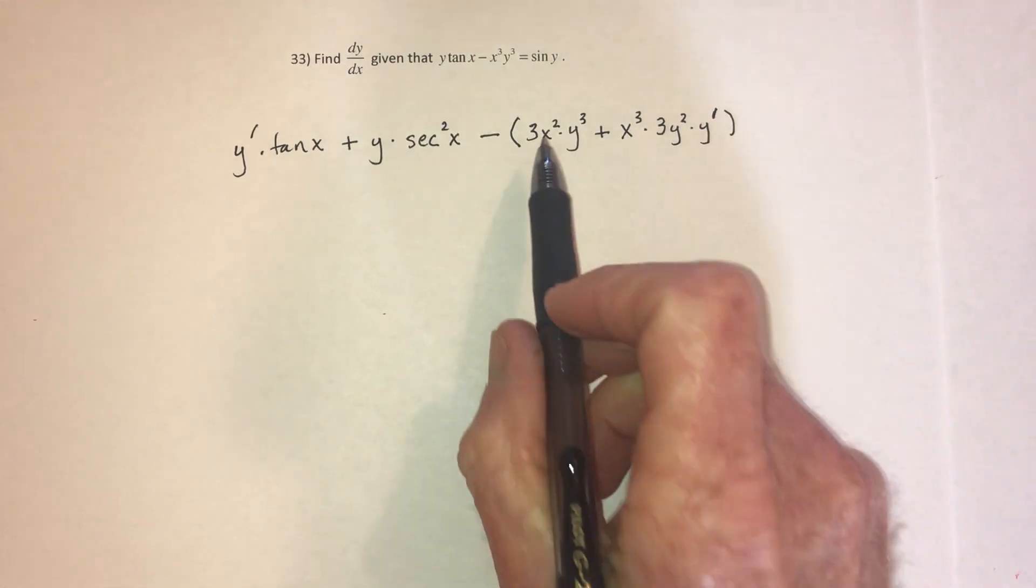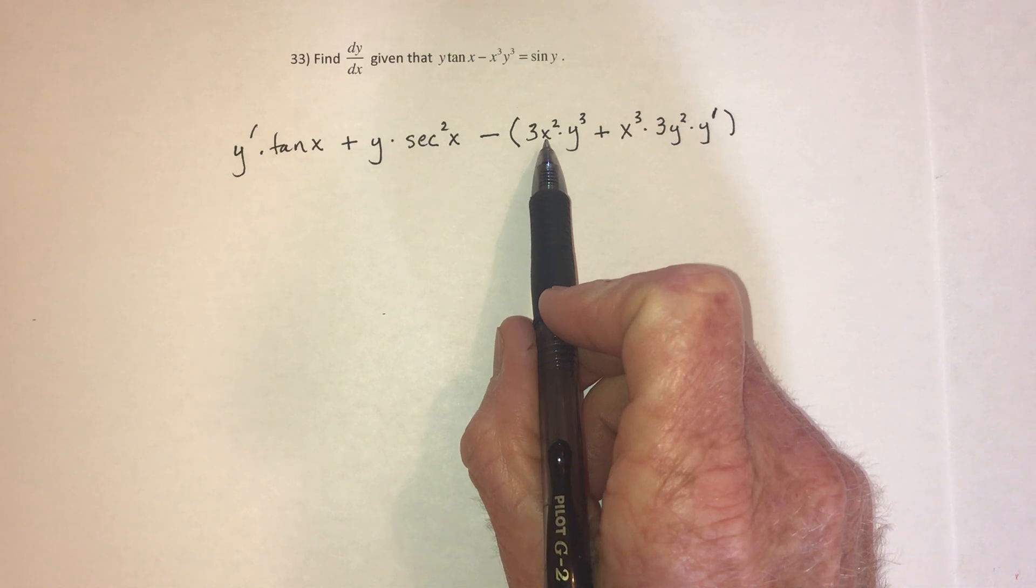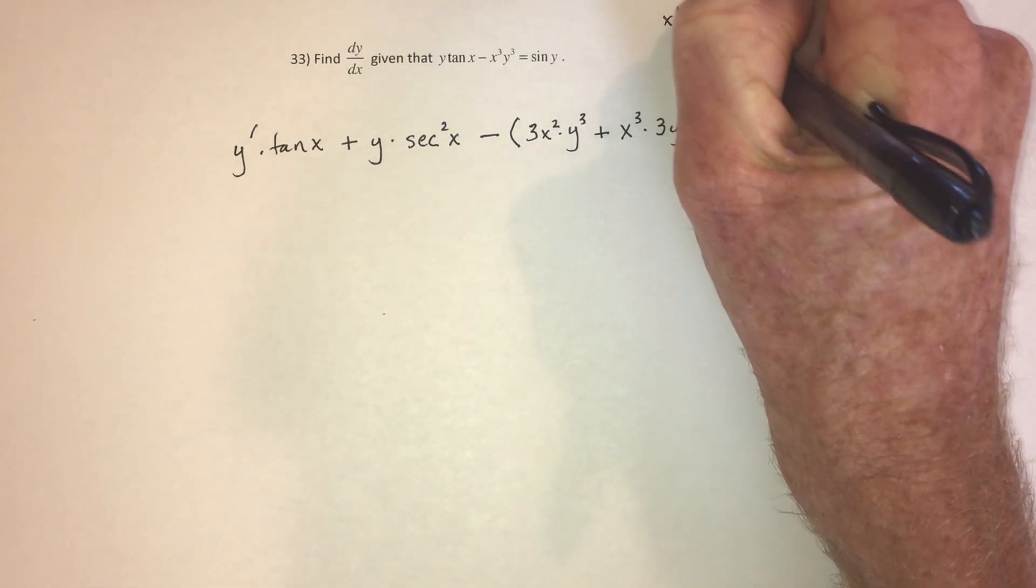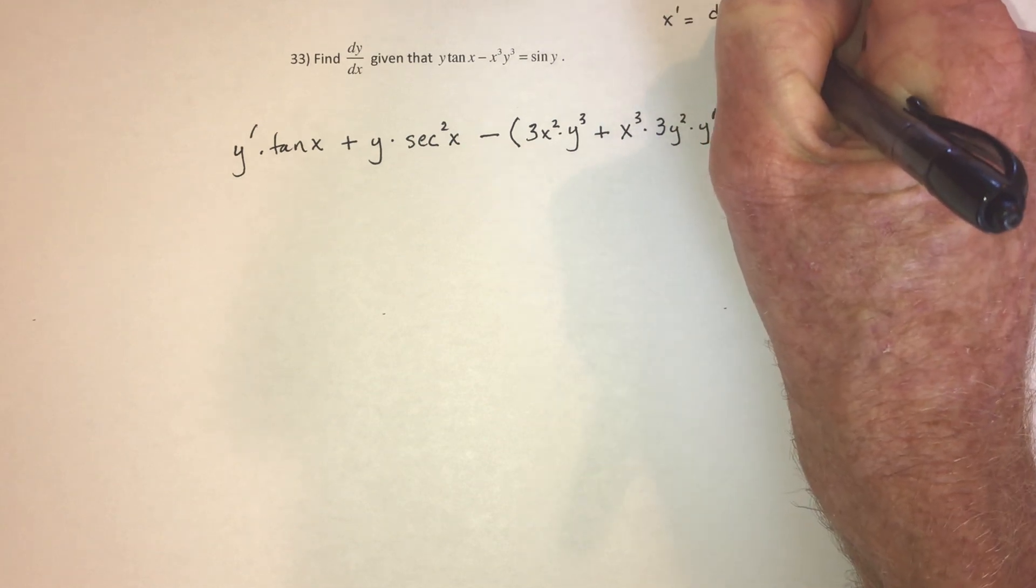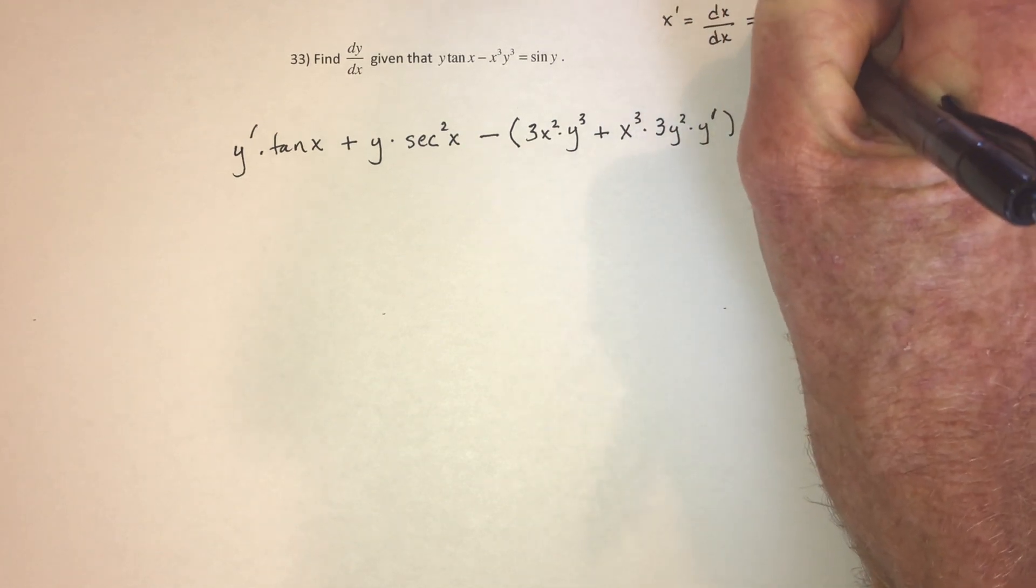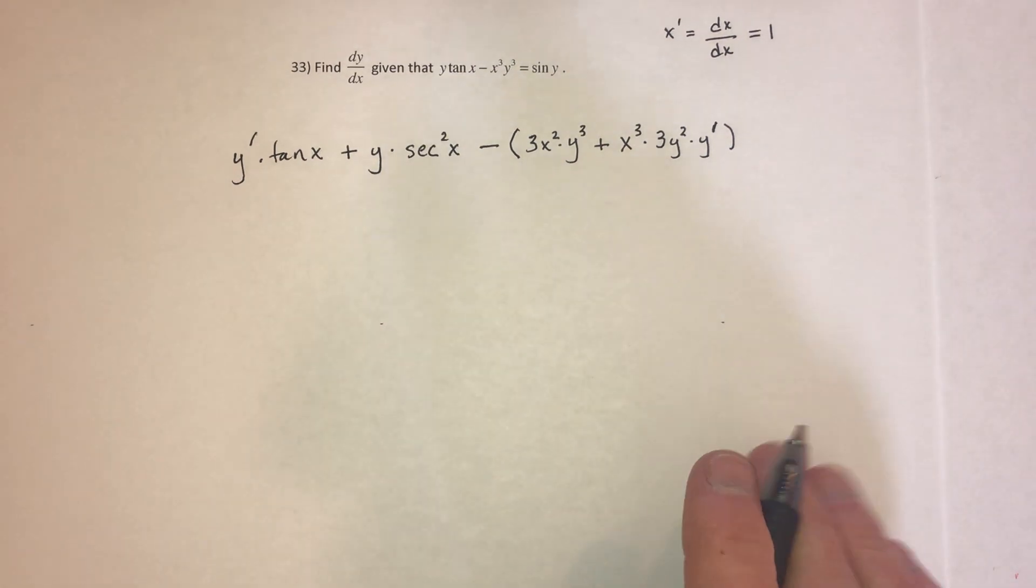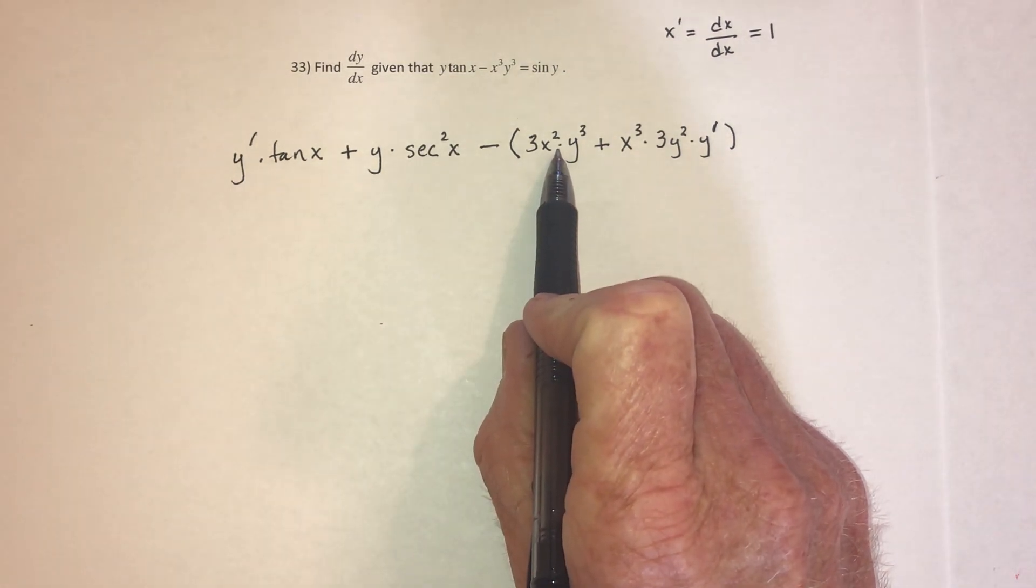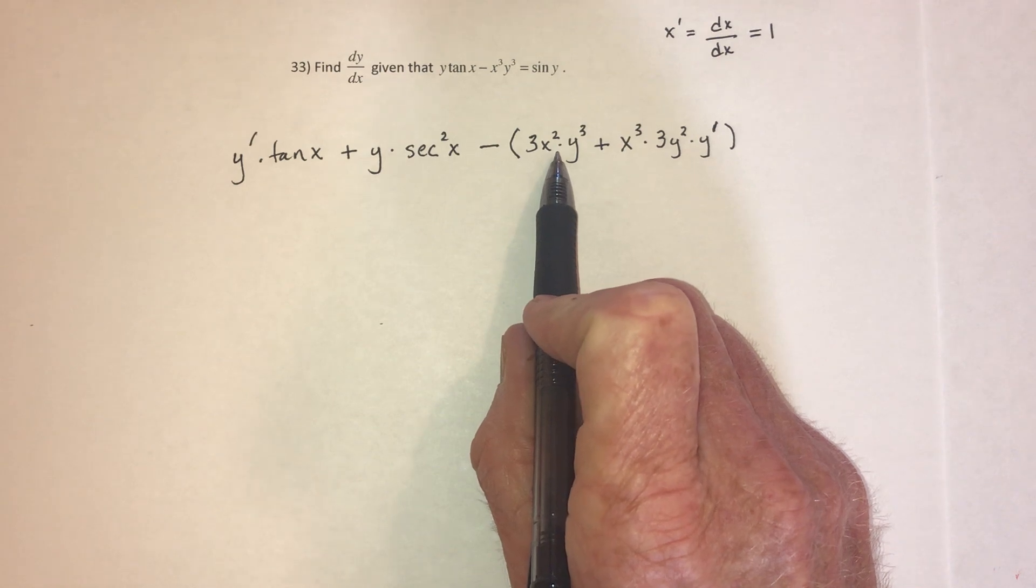Now you might be thinking, right here, why didn't you do x prime? Well, x prime means take the derivative of x with respect to x, and that equals just a 1. So right there I could put times 1, but it's not going to change the answer, so I don't really need to put it.